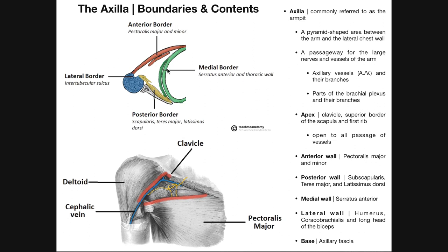In green here we have the medial border. The medial border is composed of the serratus anterior, but also a little bit of the thoracic wall, especially anteriorly. Notice that as we get further along, the serratus anterior is composing most of that medial border. But in general, it's the serratus anterior and the thoracic wall.